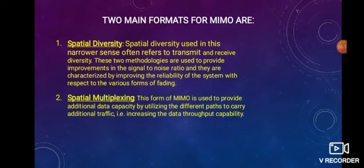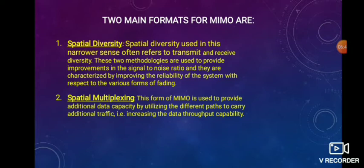The two main forms on which MIMO is based are spatial multiplexing and spatial diversity. Spatial diversity, in the narrower sense, refers to transmit and receive diversity. These two methodologies provide improvements in signal to noise ratio, and they are characterized by improving the reliability of a system with respect to various forms of fading. Various forms of fading can be improved with the help of the diversity technique.